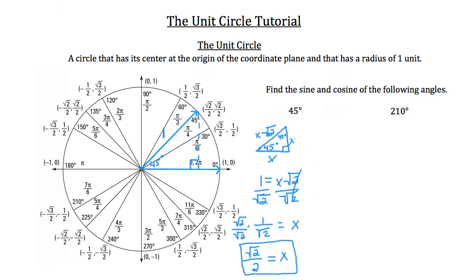Both sides of this triangle have a value of root 2 over 2. Notice that the sides of this triangle are the height — the distance from the base on the x-axis up to the point where it meets the circle — and the length from the origin out to where the triangle makes a 90-degree angle. Both of those sides happen to be root 2 over 2, and that's where those values on the unit circle come from.